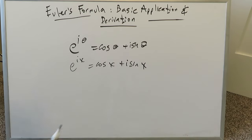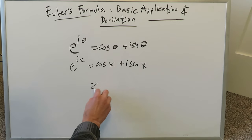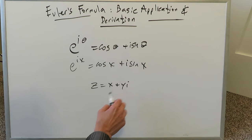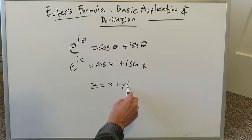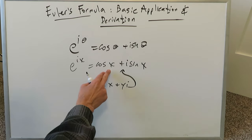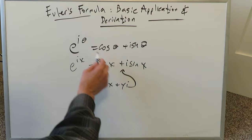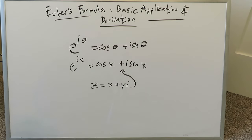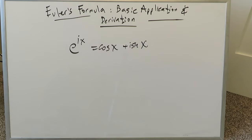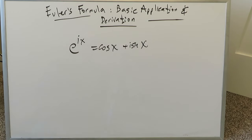This formula, Euler's formula, shows very well the interconversion between a complex number form — z is always equal to x plus yi — which can be converted into the polar form or the trigonometric form. There's an interconversion between the two. This right here is Euler's formula. I prefer to use x's versus thetas. Let's look at some very quick basic applications before we get into the more interesting part: the derivation of this formula.